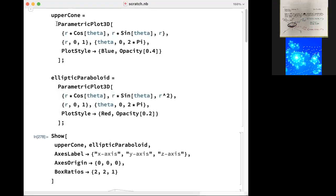In Mathematica, I use parametric plot 3D to plot the upper cone, r cosine theta, r sine theta, and r. And I let r go from zero to one, theta from zero to two pi. Let's make this blue and somewhat transparent. And the elliptic paraboloid in parametric plot 3D also, r cosine theta, r sine theta, and z equals r squared, r from zero to one, theta from zero to two pi. Let's make this red and a little more transparent.